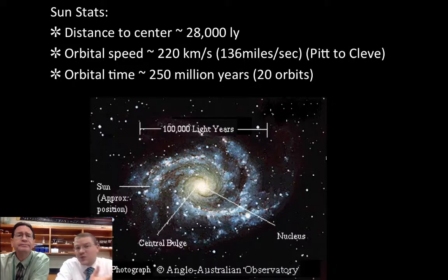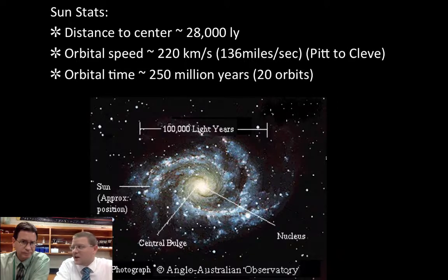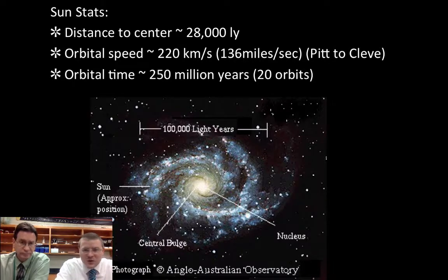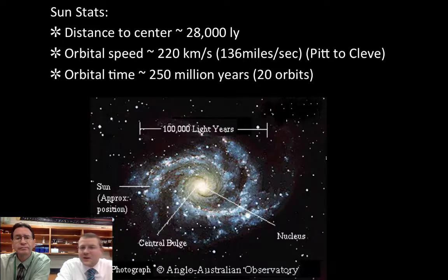Some of the statistics about where our sun actually is in the Milky Way galaxy. The galaxy is huge. It's 100,000 light years across. The distance to the center is about 28,000 light years. The sun is moving very, very quickly as it orbits the galaxy. So it's moving around that central bulge. And based on our speed, we know that it takes around 250 million years for us to make one orbit. It's a long time. Which means in the sun's lifetime, it's already made about 20 orbits around the galaxy.